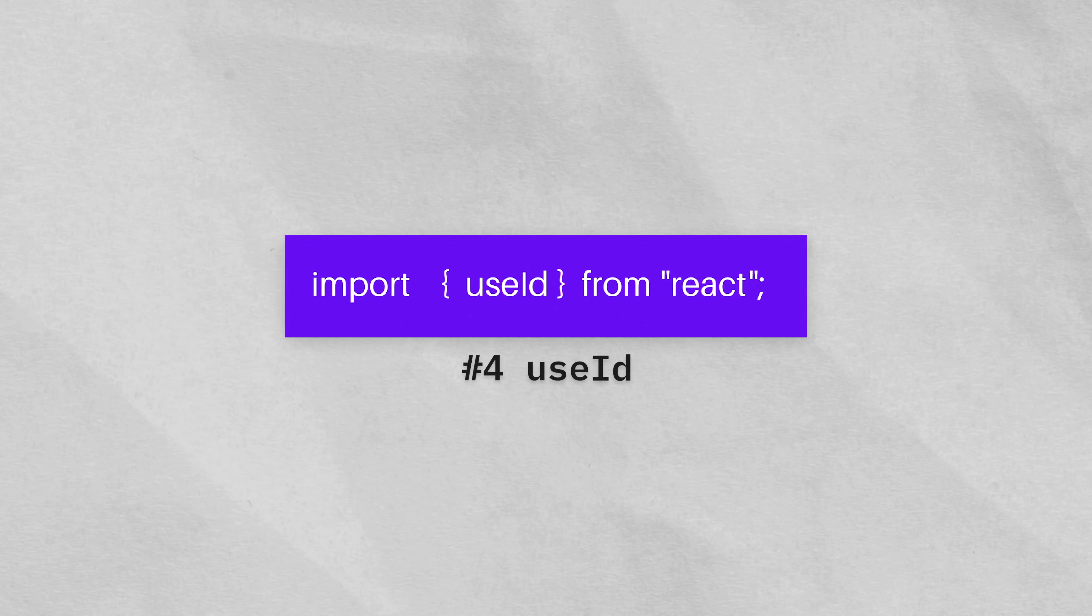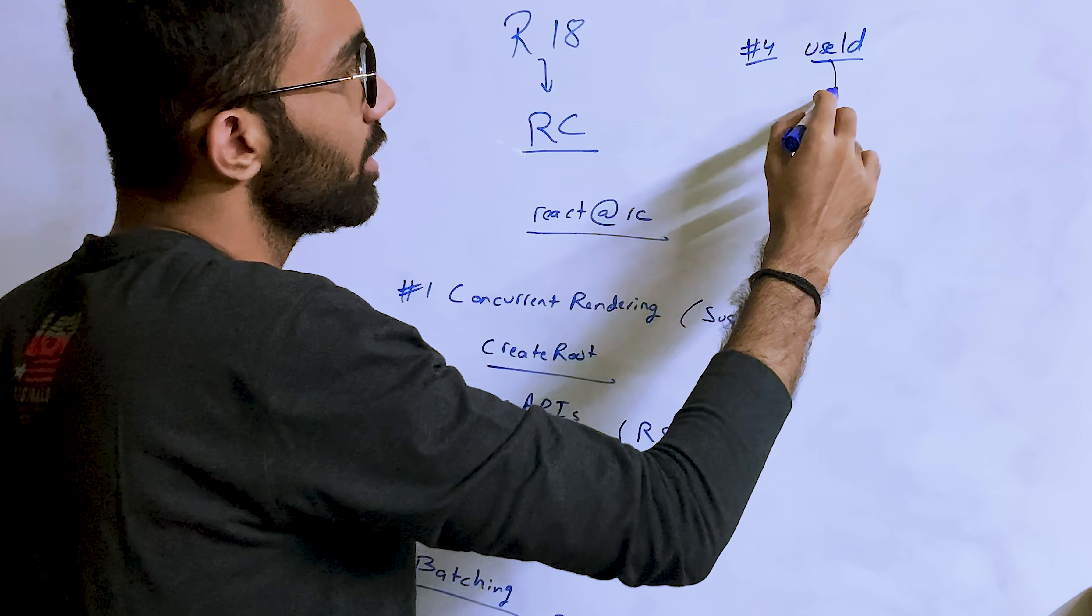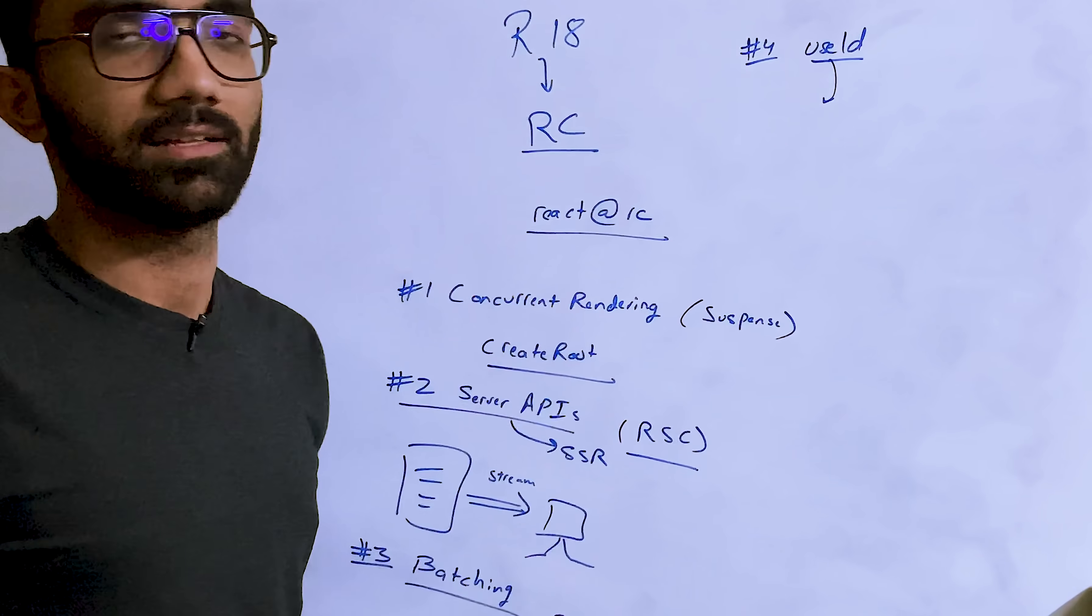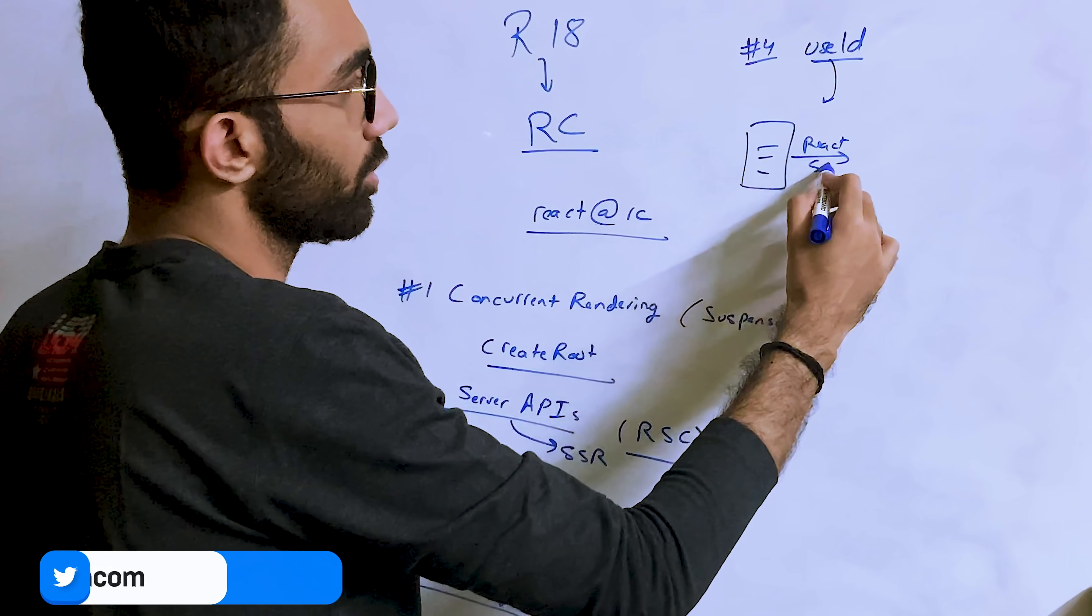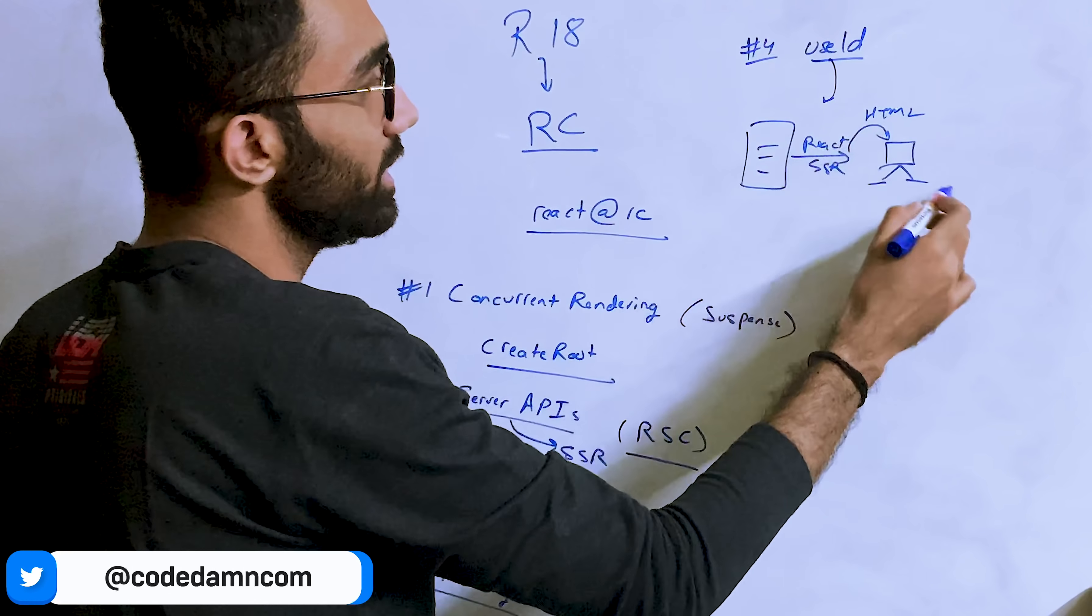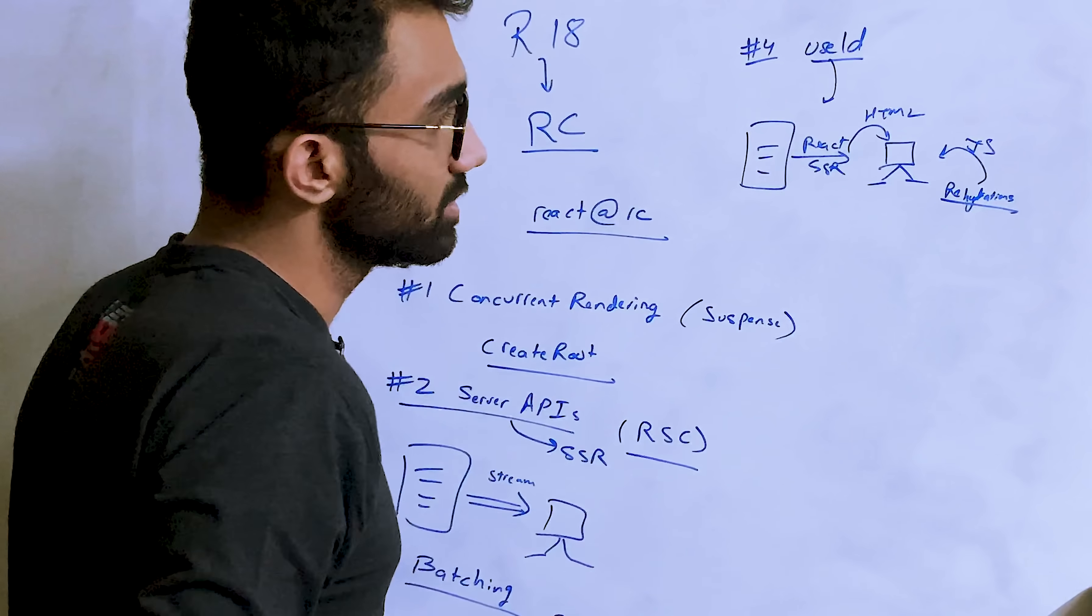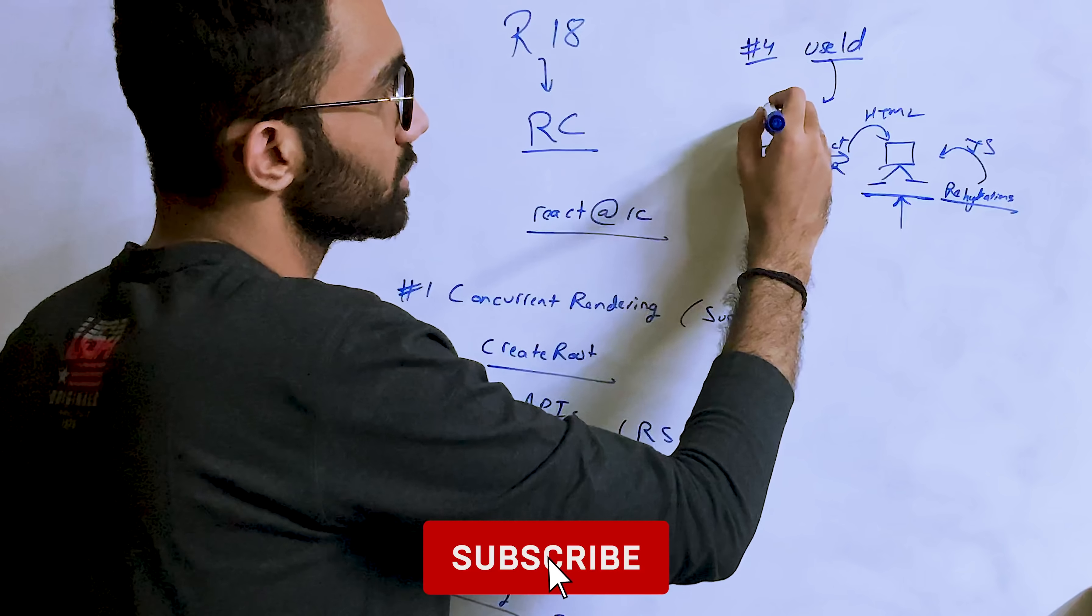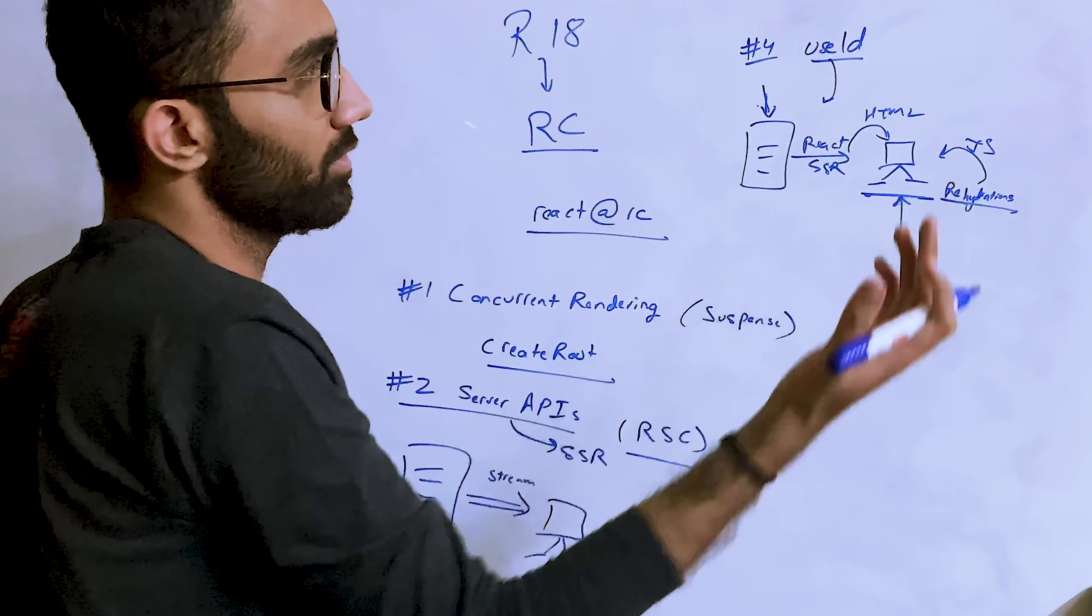Another one which I think would be useful is a new hook called useId, which actually gives you deterministic and stable unique identifiers both on client and server. What happens when your server delivers some React server-side rendered document to the client is that it is delivered as an HTML file, but you still have to rehydrate that with JavaScript. This rehydration process sometimes results in a mismatch between what JavaScript expects on the client versus what has been sent from the server.